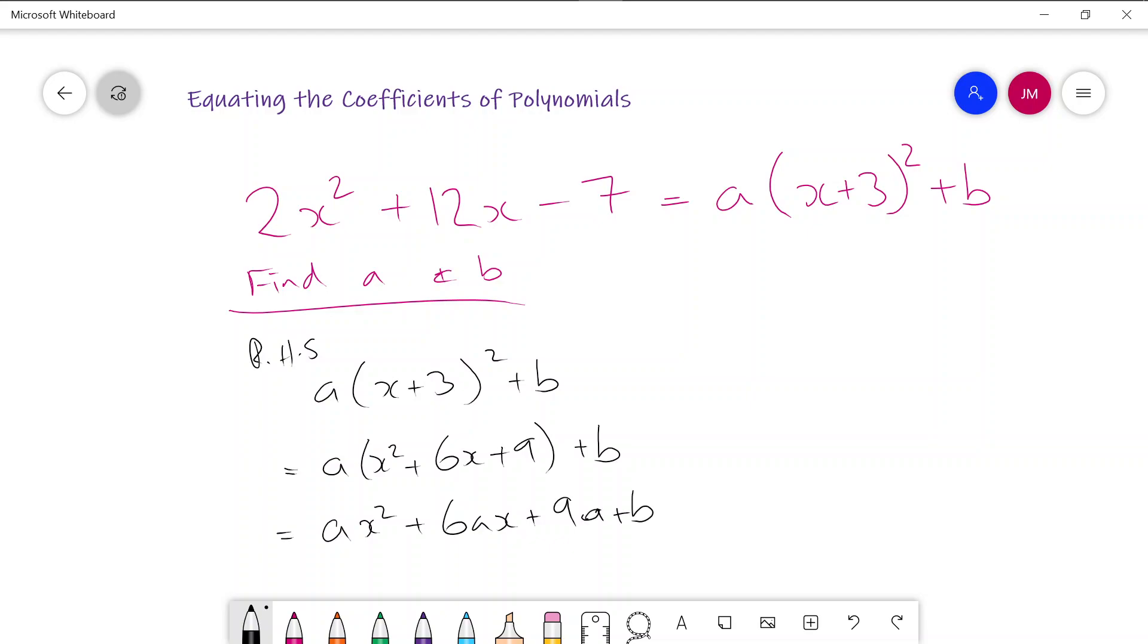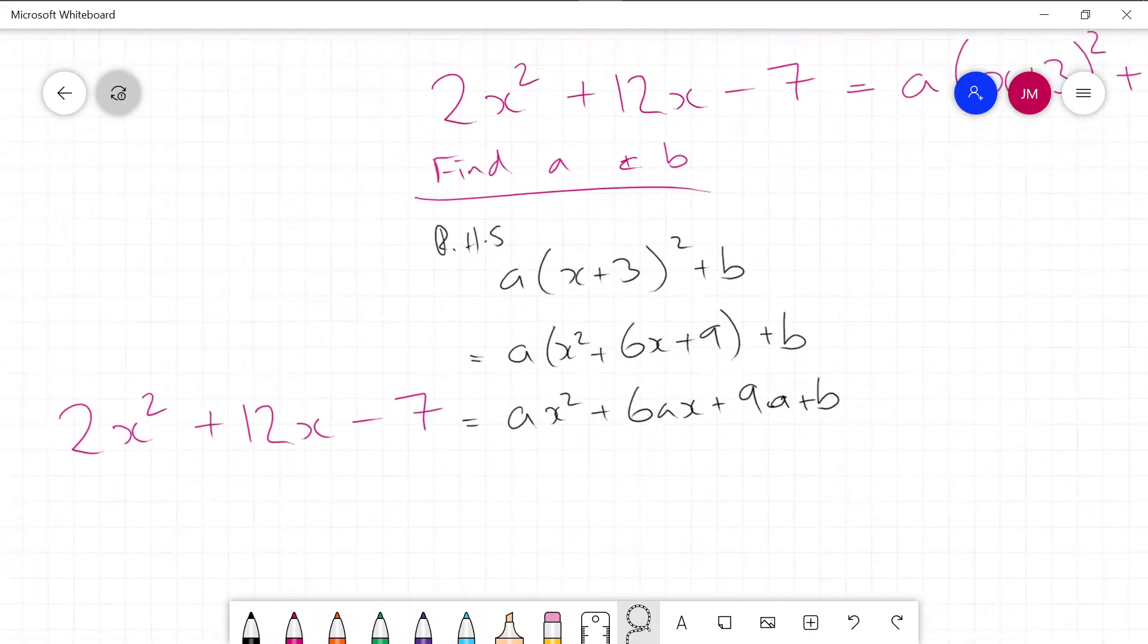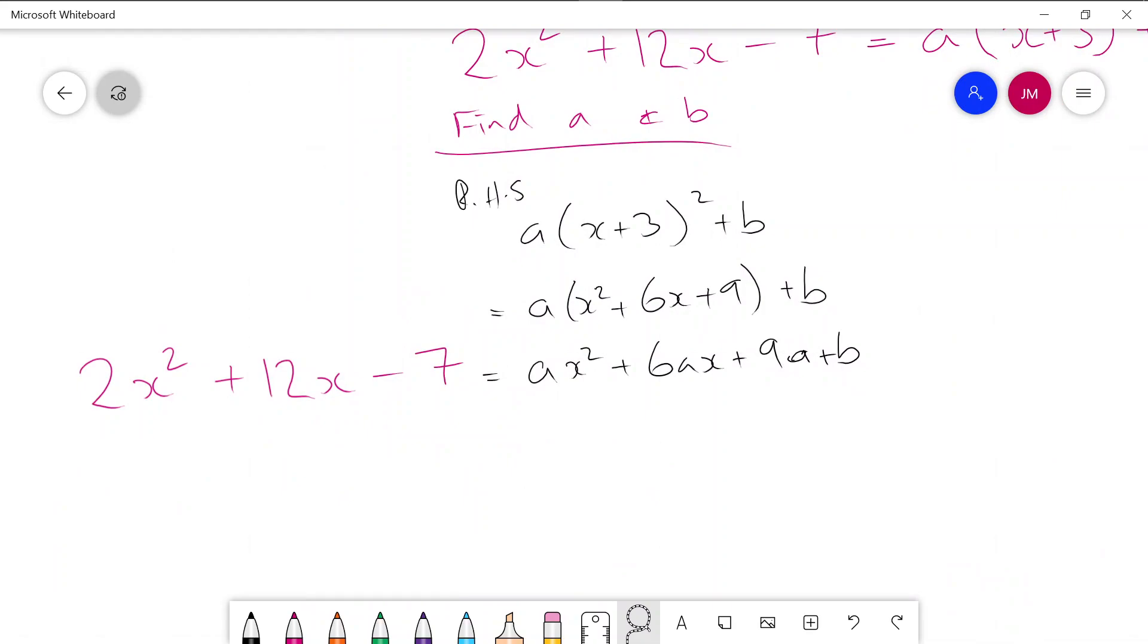So if I can expand that out and then look at the two equations or look at the two sides of the equation. I've got this left hand side here. So 2x this side here. Let's copy that one over. Control C, Control V. Alright. If I take that and look at what the right hand side equals now. I've got 2x squared plus 12x minus 7 is equal to ax squared plus 6ax plus 9a plus b.